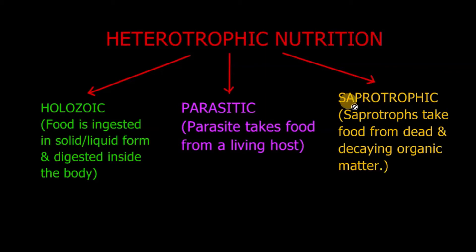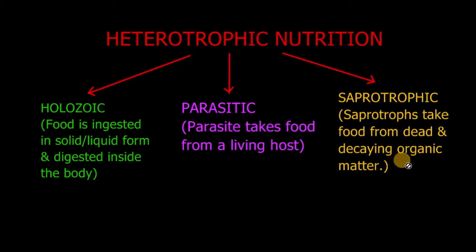The third kind is saprotrophic mode of nutrition. Saprotrophs take their food from dead and decaying organic matter. Such kind of nutrition is exhibited by decomposing bacteria.